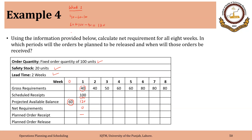The net requirements are negative in week two as well — that is the requirement of 40 minus 120 available, which is minus 80. So there will be no net requirements and no corresponding planned order receipt. After meeting the requirement of 40, we will be left with 80 units — total supply is 120 and requirements are 40, so we will be left with 80.